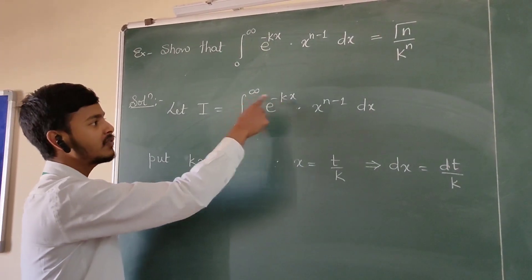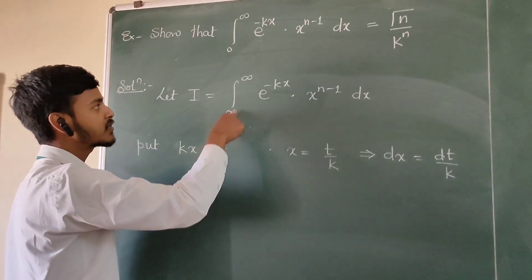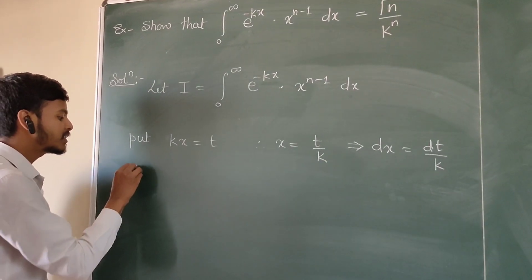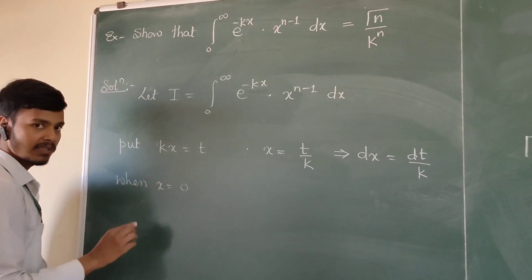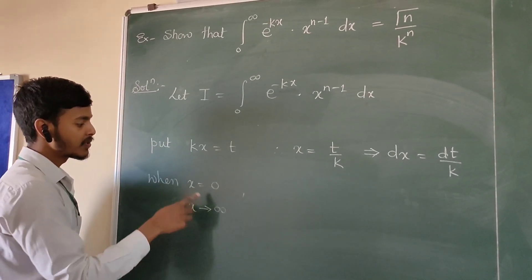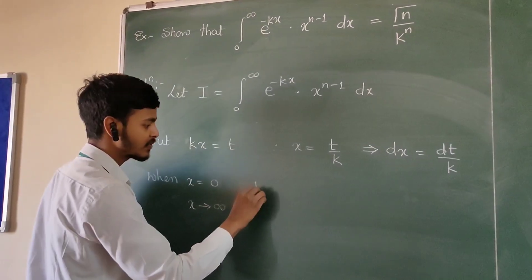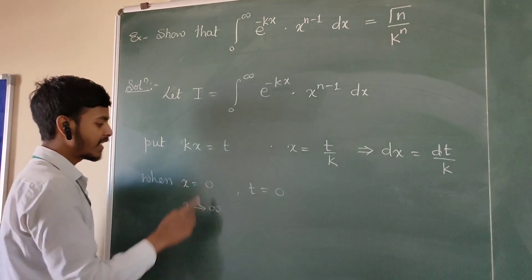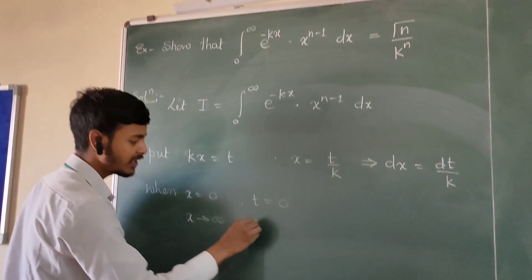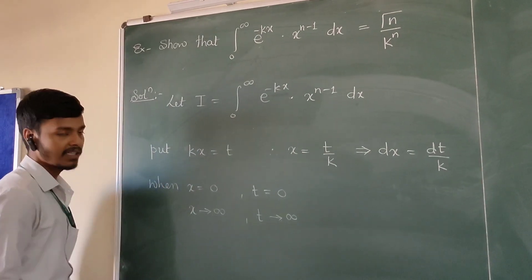Now consider the limits of x. As we are going from x to t, the limits of x should give us the limits of t. The limits of x are x equals 0 and x tends to infinity. When x equals 0, t equals k times 0, so t equals 0. When x tends to infinity, t tends to infinity, because a scalar times infinity is infinity.